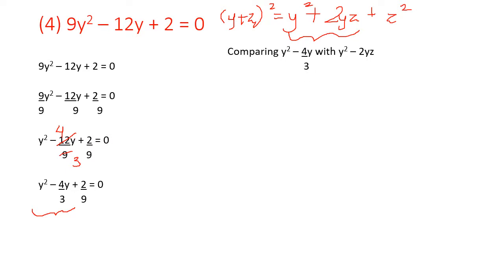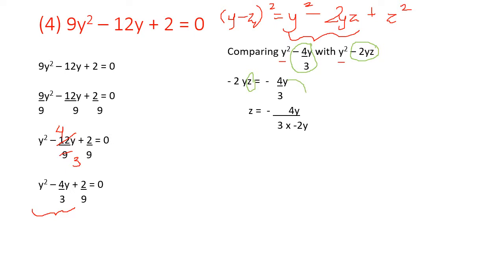Comparing y squared minus 4y upon 3 with y squared minus 2yz — since we have a minus sign, the y squared and y squared are equivalent. So we get minus 4 upon 3 y equals minus 2yz. Since we have y on both sides, we shift 2y to the other side. So z equals minus 4y upon 3 divided by minus 2y. The minus signs cancel, and y cancels, and 4 and 6 are divisible by 2, giving z equal to 2 upon 3.